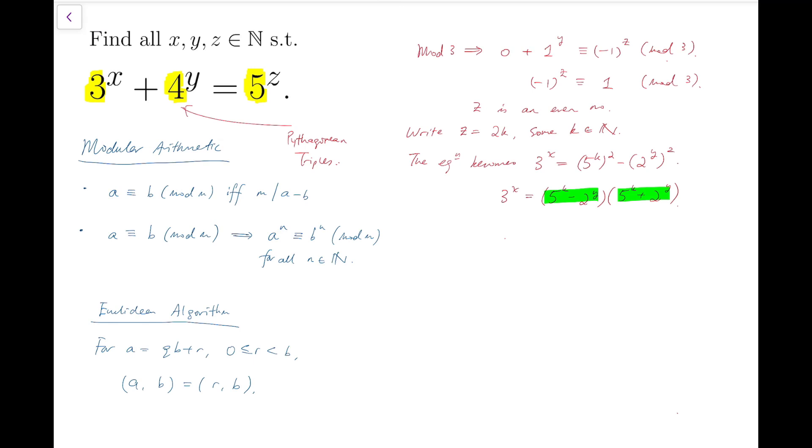Then, because the product of these two expressions is a power of 3, that means both of these expressions in green must also be a power of 3. However, notice that they are actually coprime because we can find the GCD of these two expressions. Notice that I can use the Euclidean algorithm here by adding up the two expressions, and it will become 2 times 5 to the k. Now, the GCDs are equal, and notice that this also has to be a power of 3.